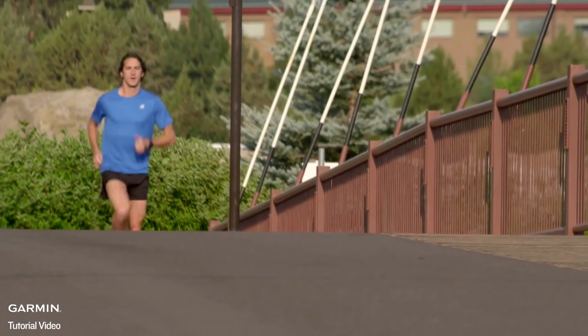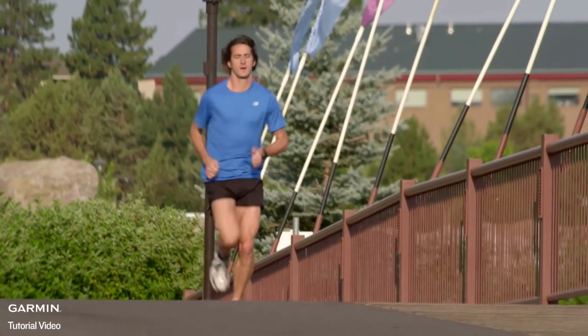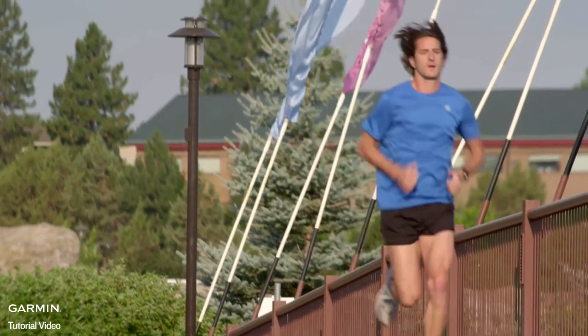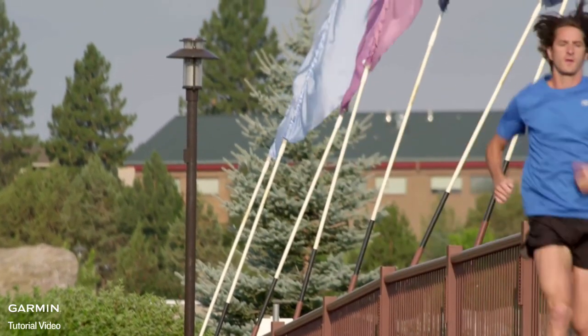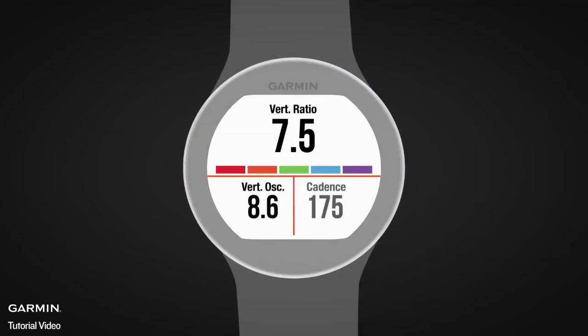To view the running dynamics measurements, put on the HRM Run and make sure it's paired to your watch. During your running activity, scroll down until you see either of the running dynamics screens.